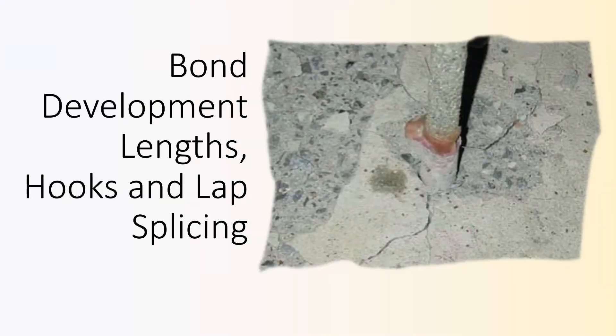One of the fundamental principles in reinforced concrete design is the effective bond between the concrete and the reinforcing steel. Without proper bonding, the steel can't contribute its full strength, and the composite action we rely on in RC structures simply breaks down.